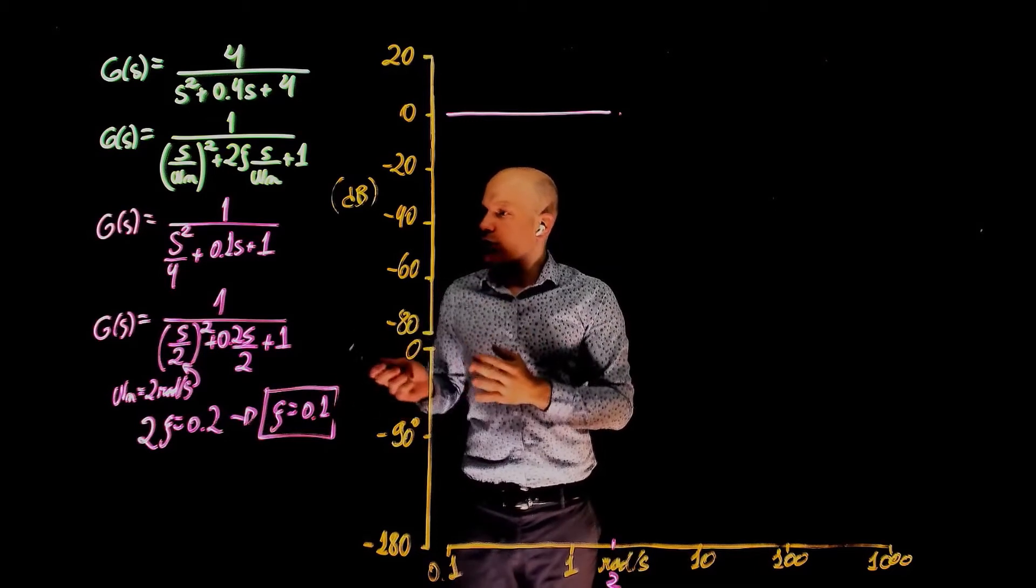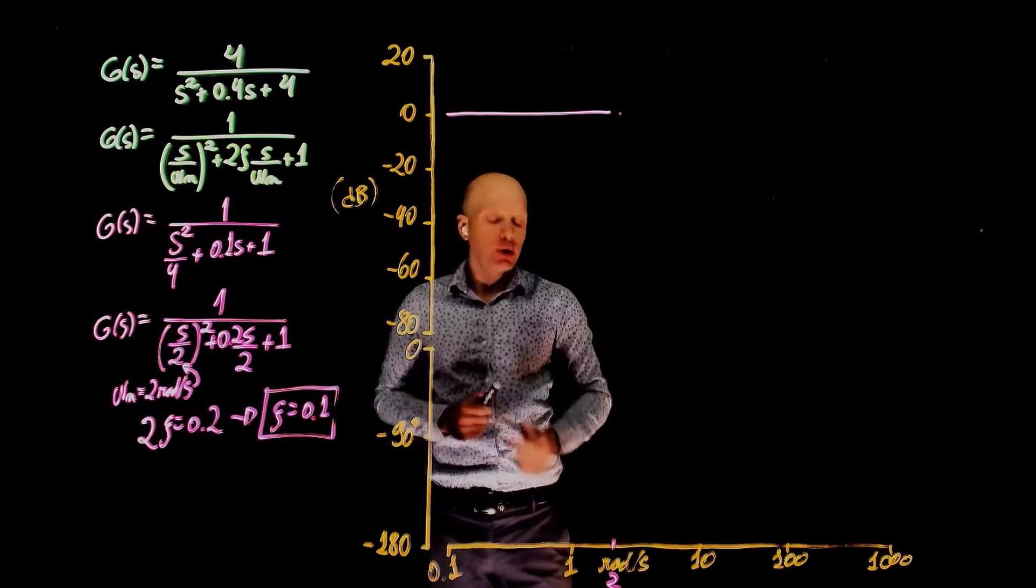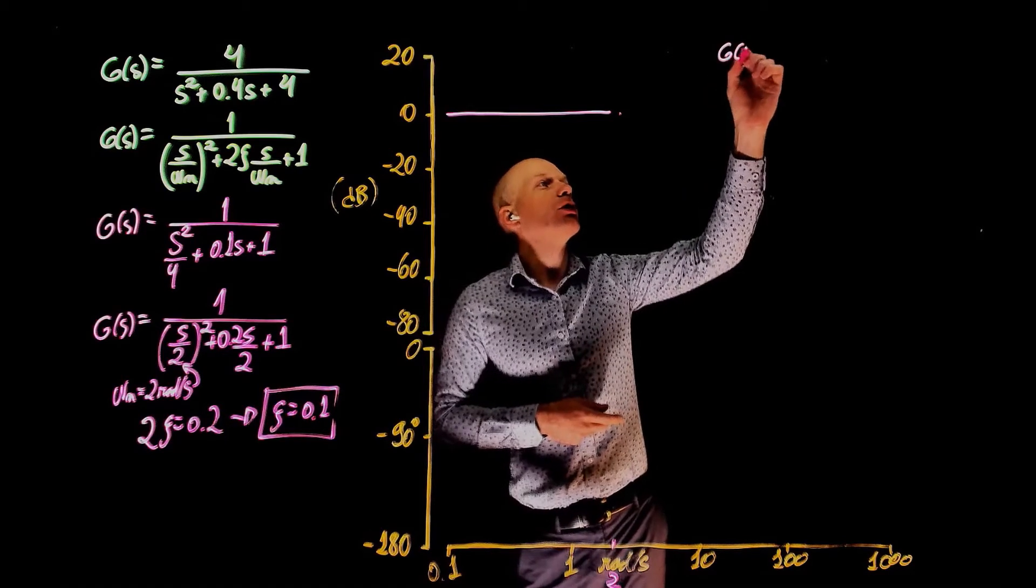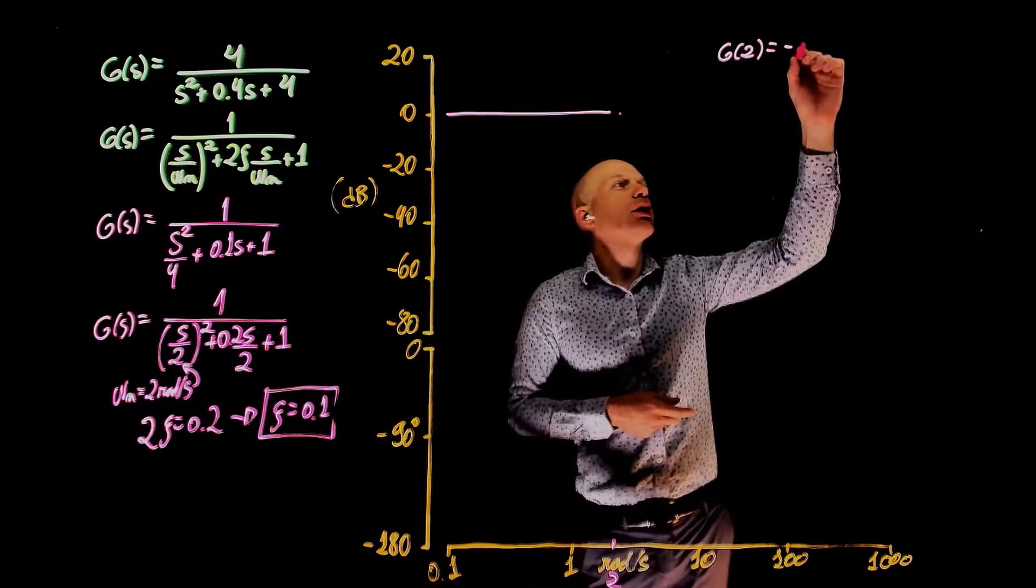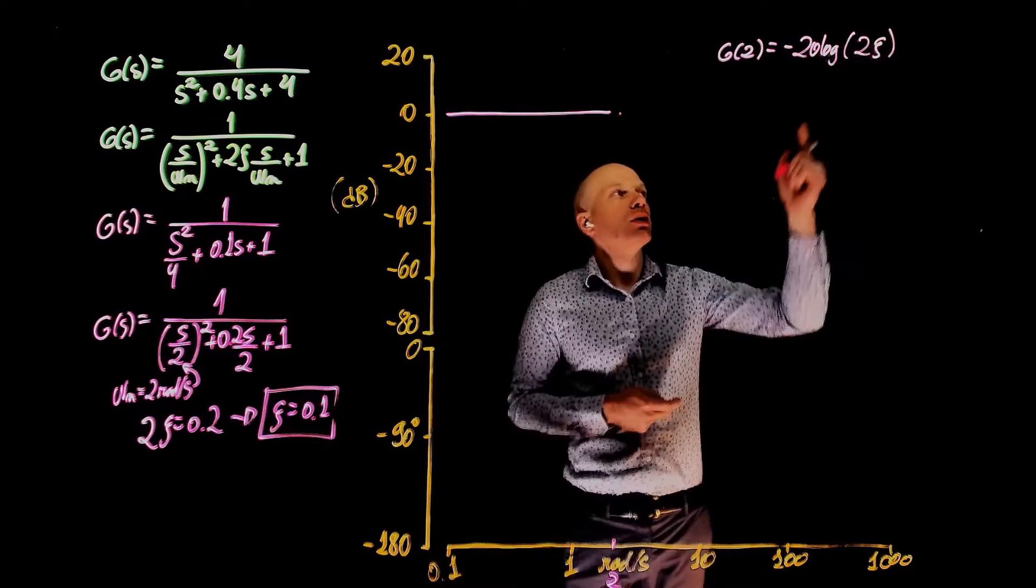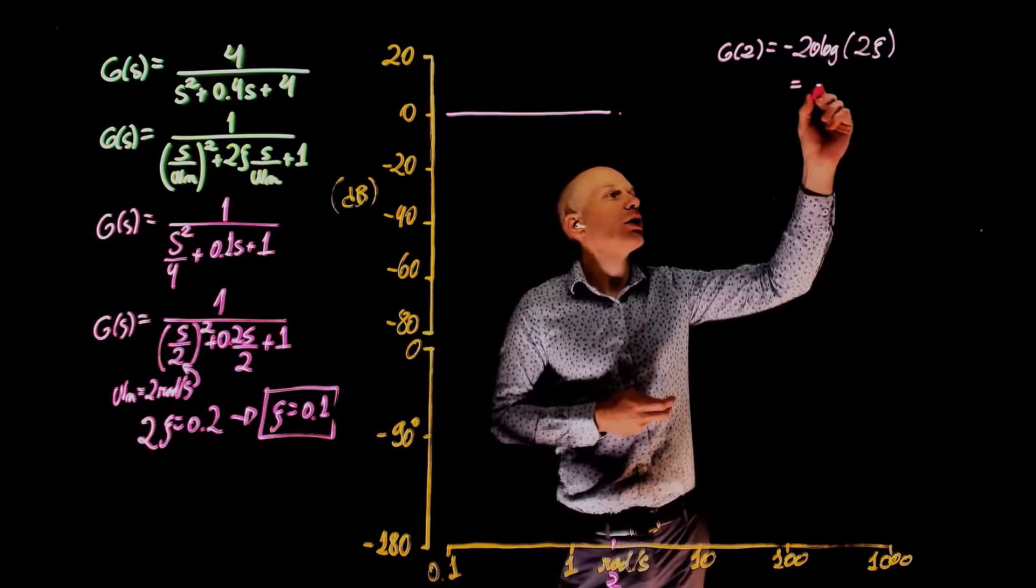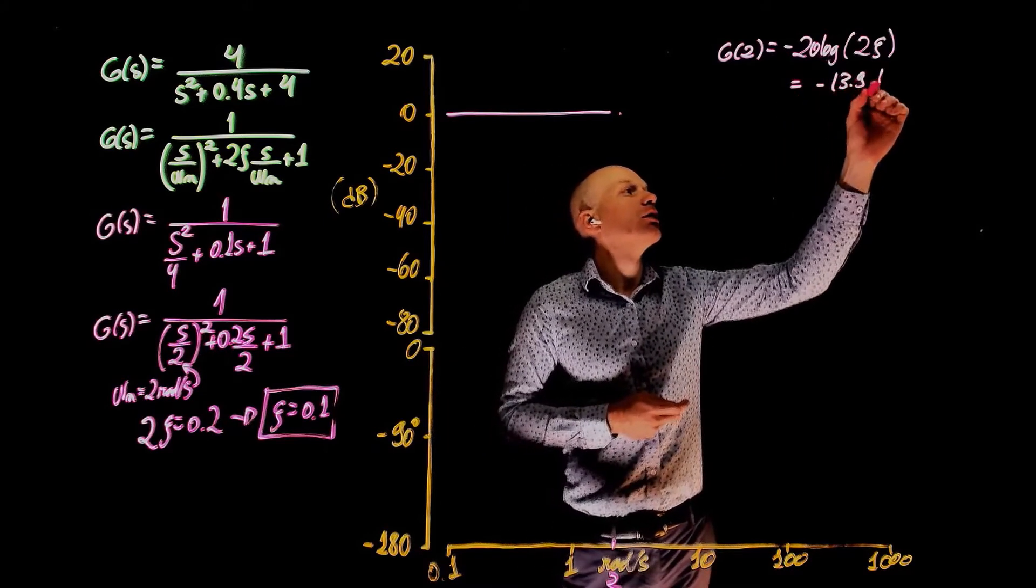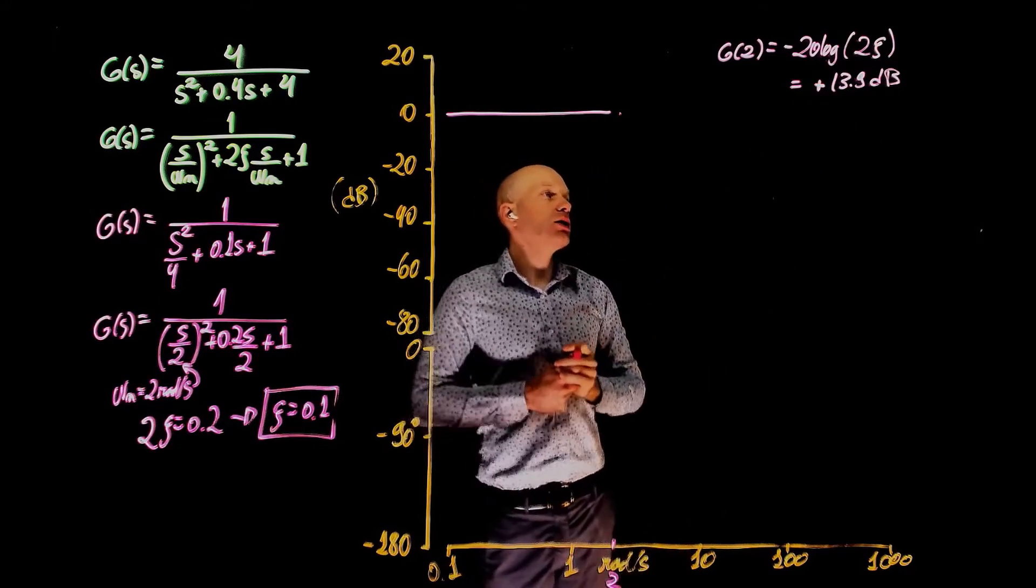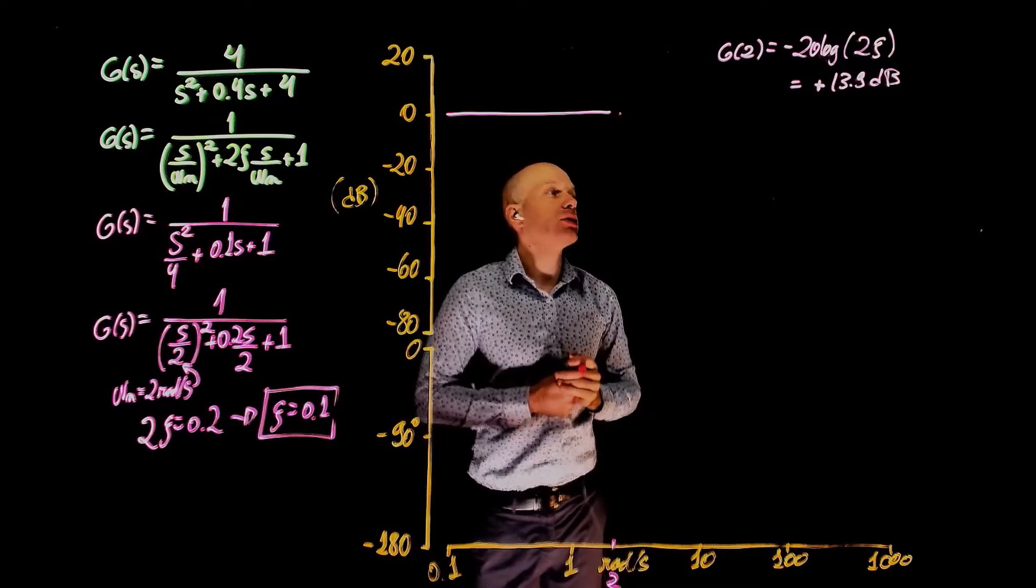Because this is a complex conjugate pole, now the Bode plot may go up or down depending on the damping ratio. We know that at this cutoff frequency for complex poles, which in this case is 2, the magnitude of the transfer function becomes negative 20 log of 2 zeta. Zeta is 0.1, negative 20 log of 0.2 is negative 13.9 decibels, positive 13.9 decibels.